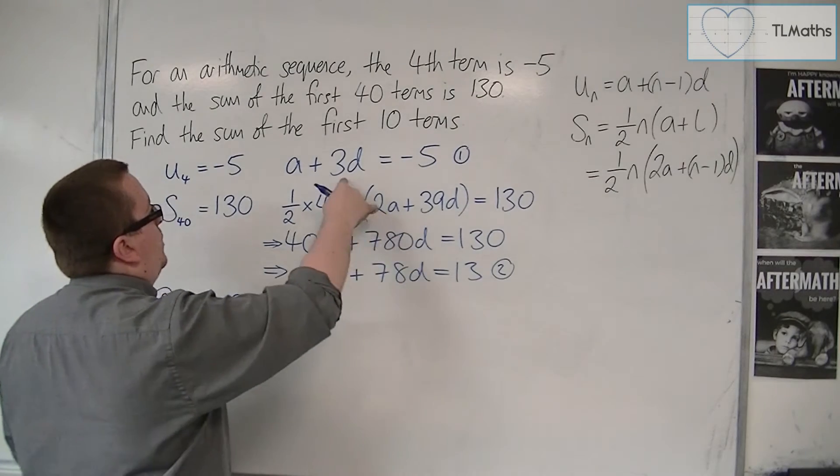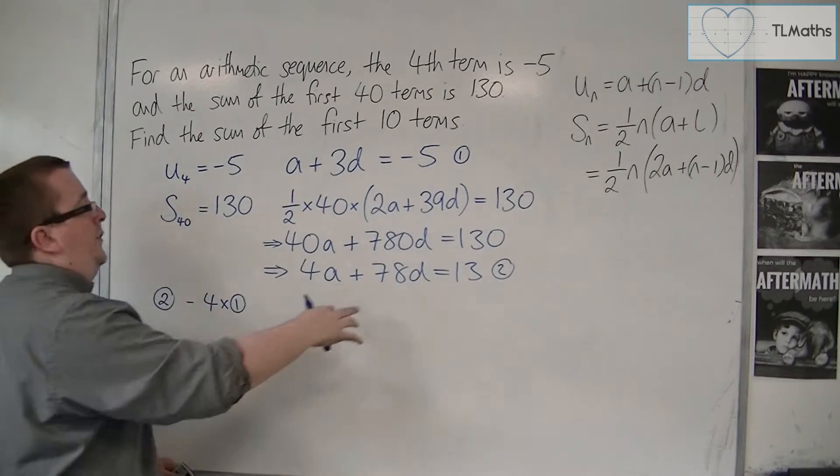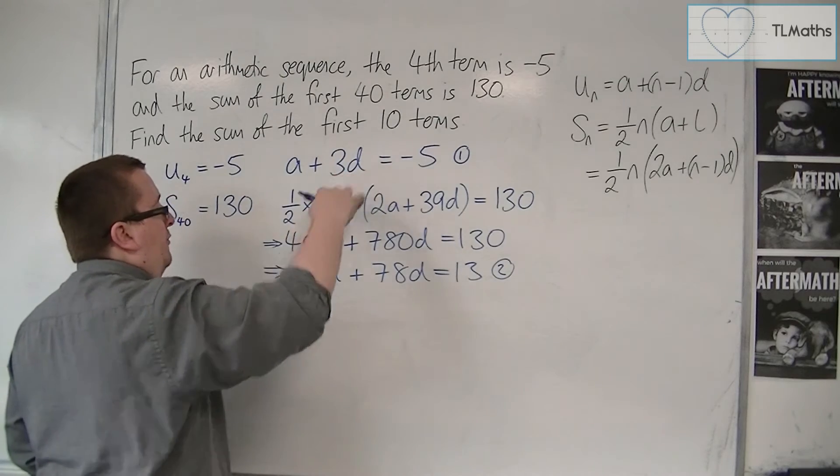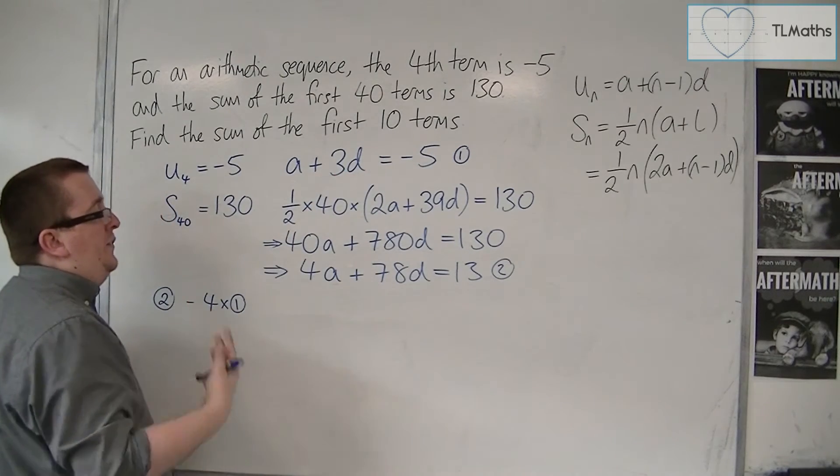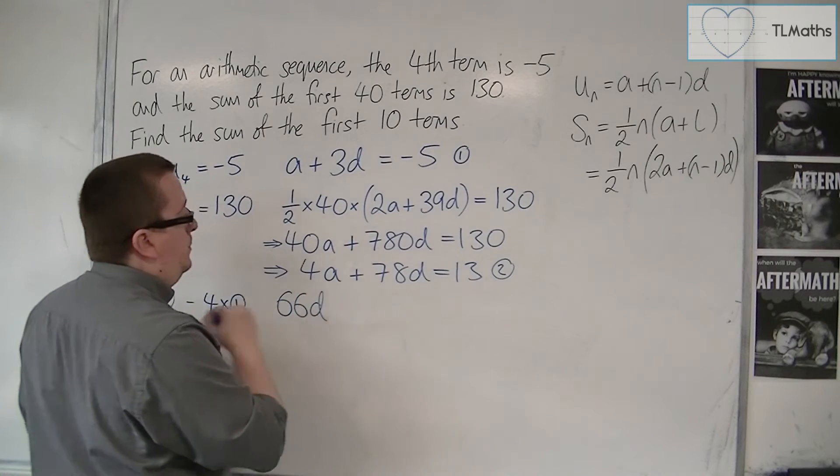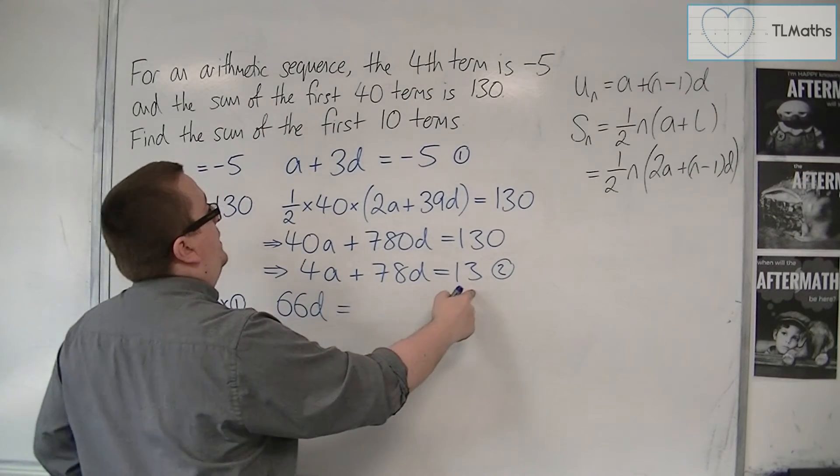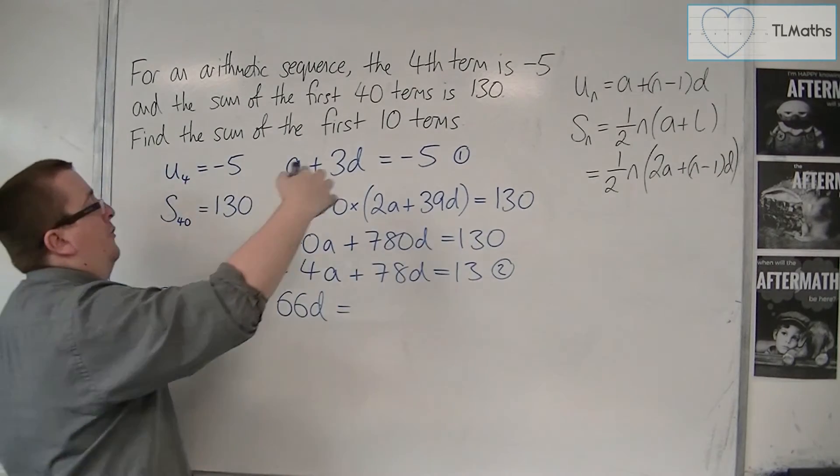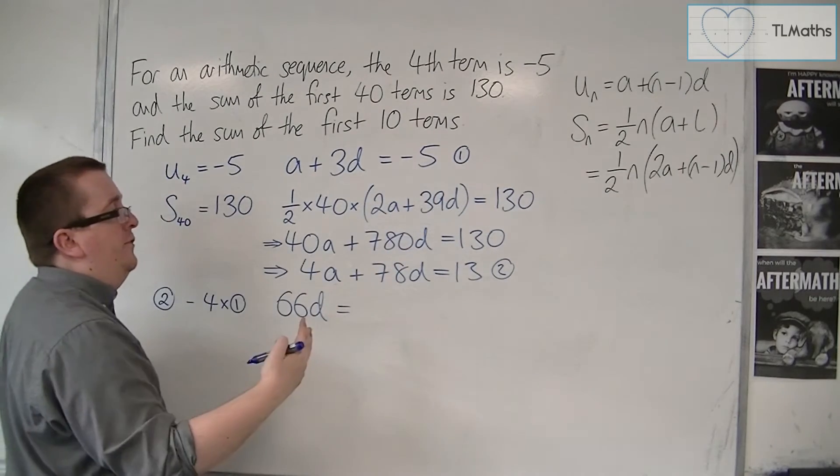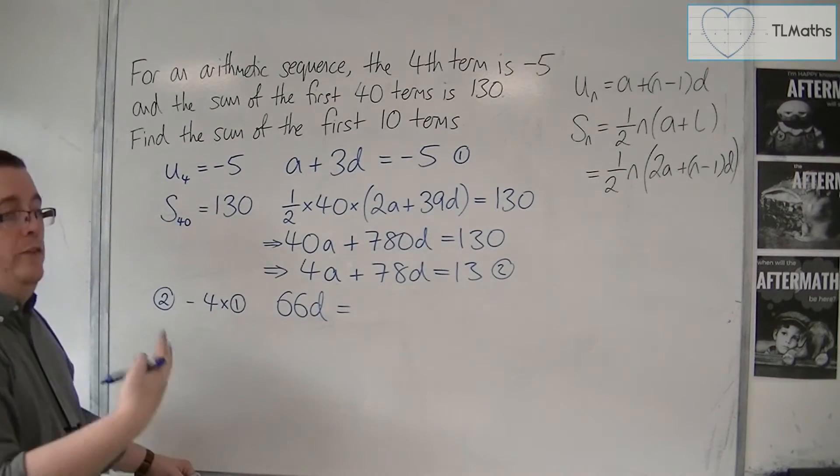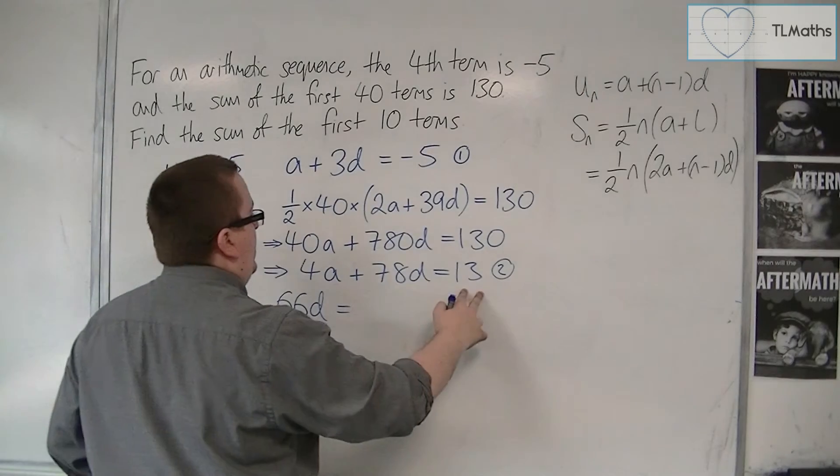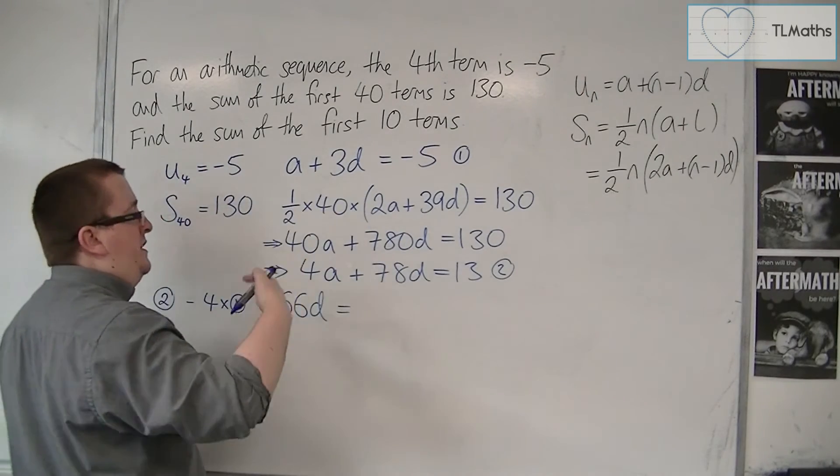78d take away 4 lots of 3d, so 78d take away 12d is 66d, and then I've got 13 take away 4 lots of minus 5. 4 lots of minus 5 is minus 20, so 13 take away minus 20 is actually 33.